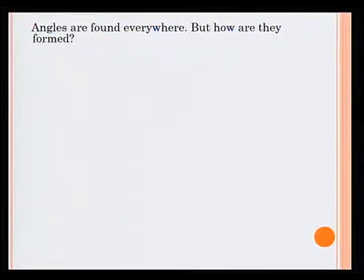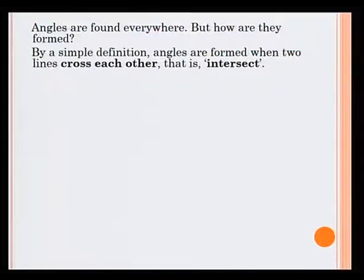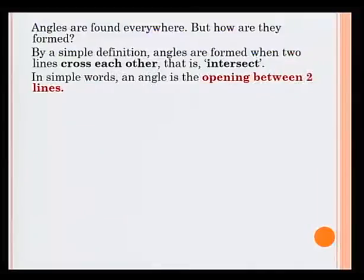Angles are found everywhere. But how are they formed? By a simple definition, angles are formed when two lines cross each other, that is, intersect. In simple words, an angle is the opening between two lines.